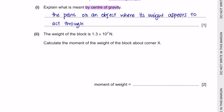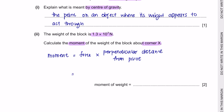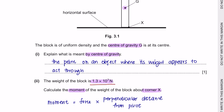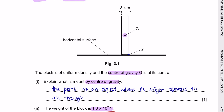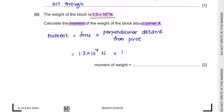Part 2: the weight of the block is 1.3 × 10⁷ N. Calculate the moment of the weight about corner X. According to the formula, you multiply the force (the weight) by the perpendicular distance from the pivot. The force acts downwards and the perpendicular distance from the centre to point X is half of 3.4 metres, which is 1.7 metres. Putting this into the calculator gives the moment in Newton metres — in standard form to 2 significant figures, that's your final answer.